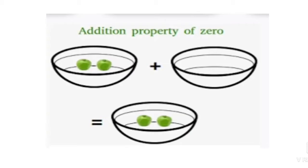Look at this picture. How many apples are there in the first dish? There are two apples, and we have to add nothing — we add zero apples. So how many apples do we get? We get two apples. It means that when we add zero to any number, we get the same number.